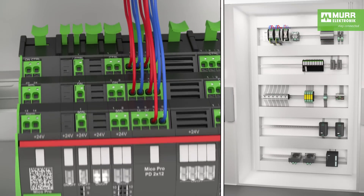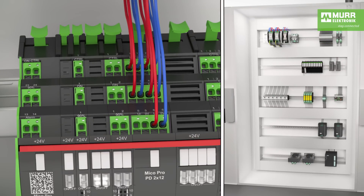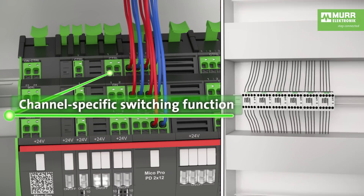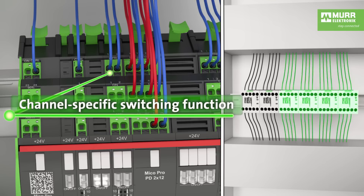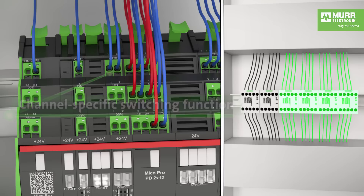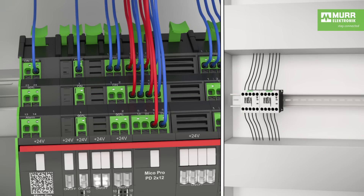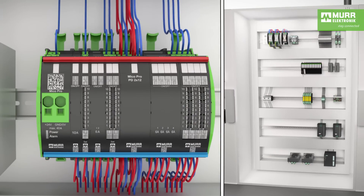A channel-specific switching function allows the flex modules to switch system components on and off via a PLC signal, without any additional contactors, relays, or optocouplers. This feature reduces a large portion of the coupling and switching level in a cabinet. All these functions significantly declutter the switch cabinet wiring and save a lot of space.